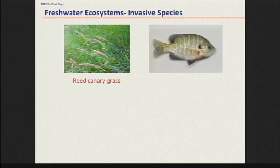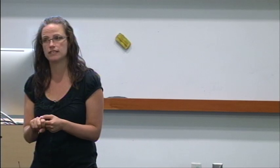That's a bluegill — these centrarchids are warm-water fishes that were introduced for sport fishing, largely. You've got your largemouth bass, your smallmouth bass. We found green sunfish in the main stem of the Willamette this year for the first time. We've got pumpkinseed. These are important components of the system because they are such strong predators.